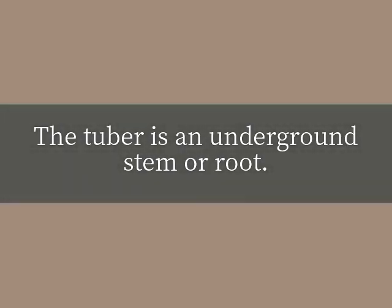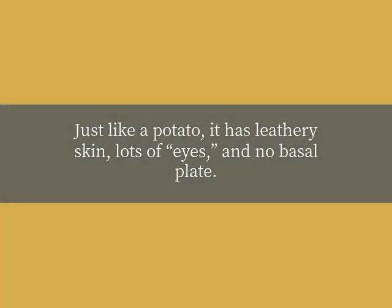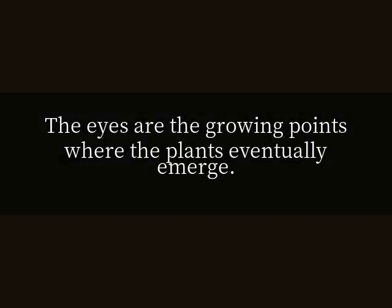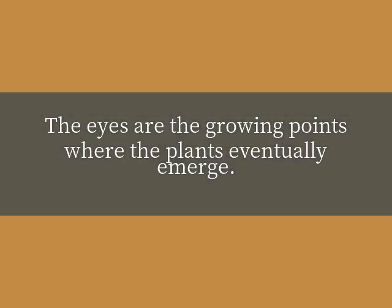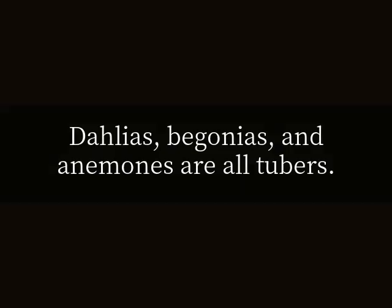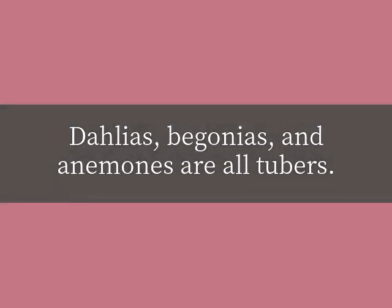The tuber is an underground stem or root. Just like a potato, it has leathery skin, lots of eyes, and no basal plate. The eyes are the growing points where the plants eventually emerge. Dahlias, begonias, and anemones are all tubers.